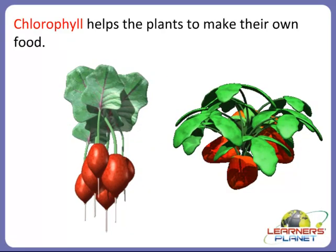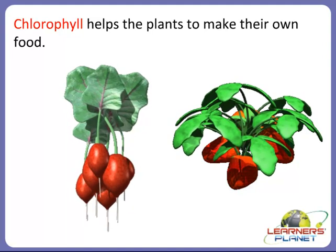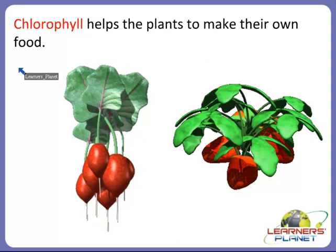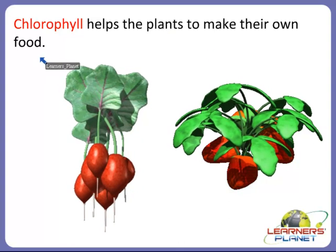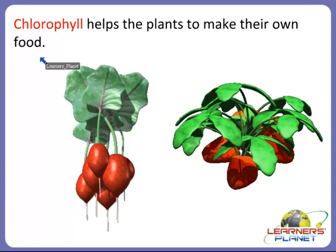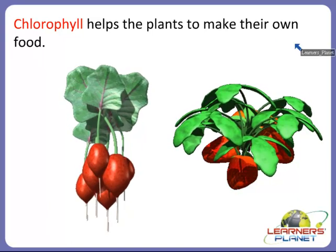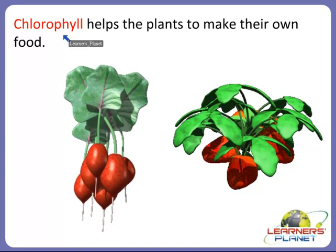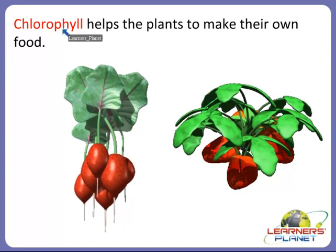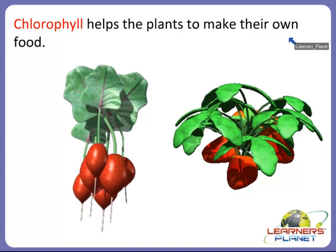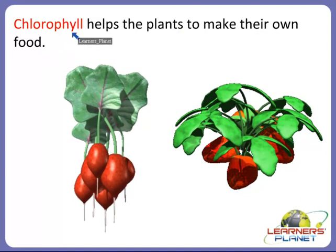What is actually chlorophyll for? What does it do to the plants? Why is it important? Because chlorophyll helps the plants to make their own food. Chlorophyll is very important — it does not only give green color to the plants, but it helps the plants to make their own food. So because of chlorophyll, plants appear green in color and plants are also making their own food.